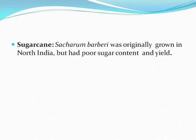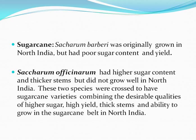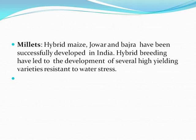Sugarcane: Saccharum barbari was originally grown in northern India but had poor sugar content and yield. Saccharum officinarum had higher sugar content and thicker stems but did not grow well in northern India. These two species were crossed to produce sugarcane varieties combining higher sugar content, high yield, thick stems, and the ability to grow in the sugarcane belt of northern India. Millets: hybrid maize, jowar, and bajra have been successfully developed in India, with hybrid breeding leading to several high-yielding varieties resistant to water stress.